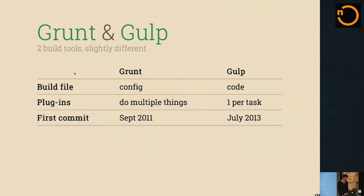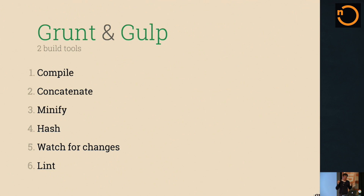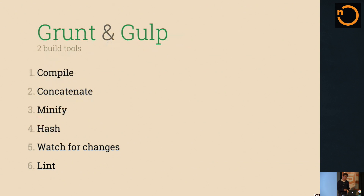Make sure that whatever build tool you use, it does compilation, concatenation, minifying, and hashing. What hashing does is make sure you don't use a regular file name like main.js when serving files, because there are going to be cache conflicts and you need to expire your cache. With hashing, it uses an MD5 hash for that file instead, so it always changes when there are any file changes. Again: watch for changes and lint your code.